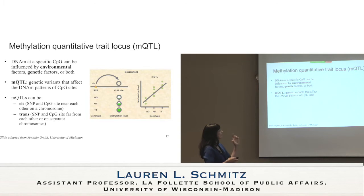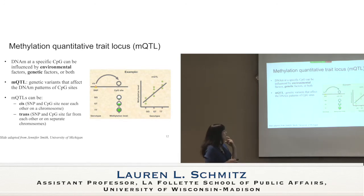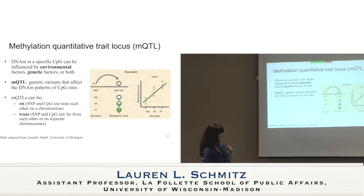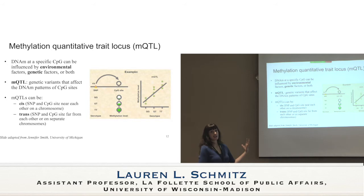A SNP that affects DNA methylation patterns is known as a methylation quantitative trait locus, or mQTL. Depending on the genotype a person has, we get different methylation levels. These mQTLs can either be in cis — meaning they're near the CpG site on the chromosome — or they can be trans, meaning the SNP and the CpG site are quite far away from each other and may even be on different chromosomes.